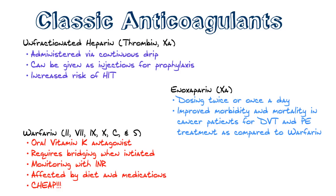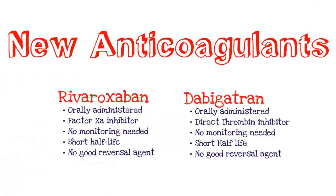Now there are new anticoagulant agents we can use to treat people for both DVT and PE, and including atrial fibrillation for prophylaxis for stroke. Some of these include rivaroxaban and dabigatran. Rivaroxaban is an orally administered drug, it's a factor Xa inhibitor, you do not need any monitoring, and it has a relatively short half-life. The problem with it is that there's no good reversal agent — so if someone starts bleeding on it, you just have to let them trend down and not give them their medication.